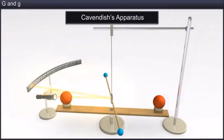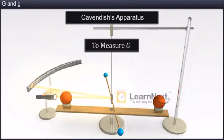Now let us try to understand how this instrument helps measure the universal gravitational constant, G.